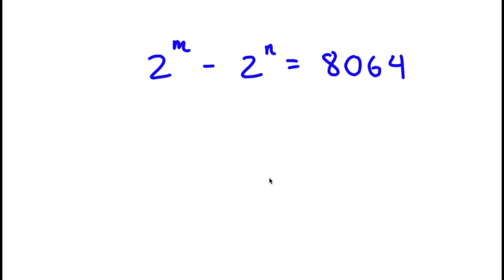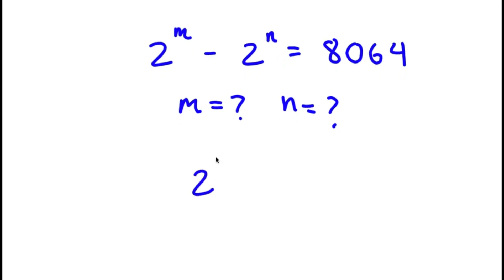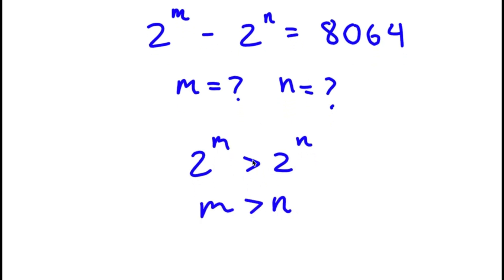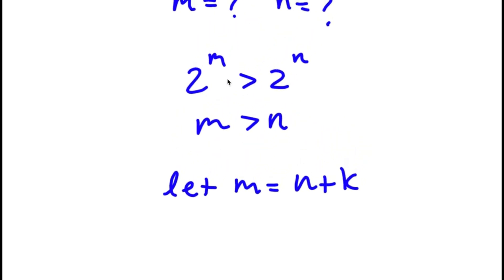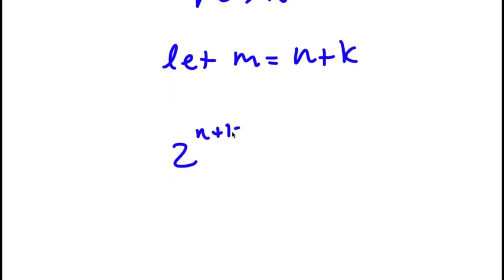So in this equation, I have 2 to the power of m minus 2 to the power of n is equal to 8,064, and I'm going to find the values of m and n. Because this expression is positive, we know that m is greater than n. So I'm going to let m equal n plus k, where k is an integer. If m equals n plus k, then I have 2 to the power of n plus k minus 2 to the power of n is equal to 8,064.